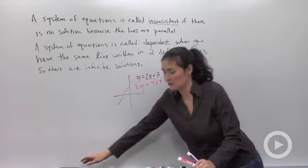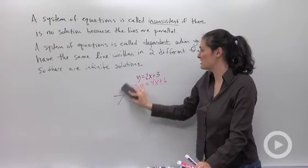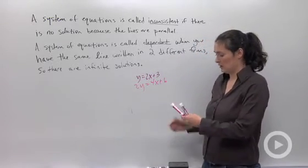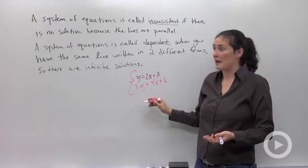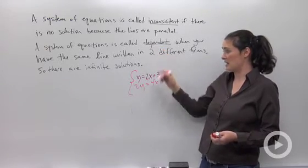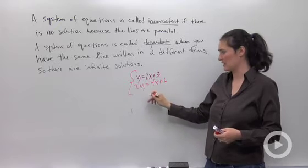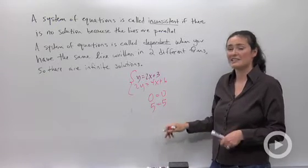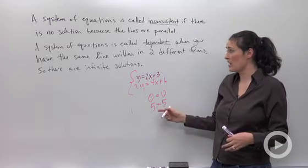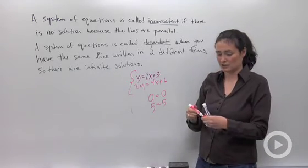So if my system of equations that I was given just had those two like that, that would give me a statement that would tell me I had dependent. I would get something when I solved that looked like 0 equals 0 or 5 equals 5. Something that's always true because always true means infinite solutions.